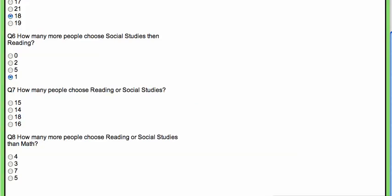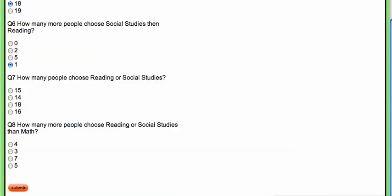How many people chose reading or social studies? Reading had 7, social studies had 8, so that's 15. And how many more people chose reading or social studies than math? For this question, I know that 7 people chose reading, 8 people chose social studies, that's 15. 11 people chose math, so 15 minus 11 is 4. So 4 more people chose reading or social studies than math.